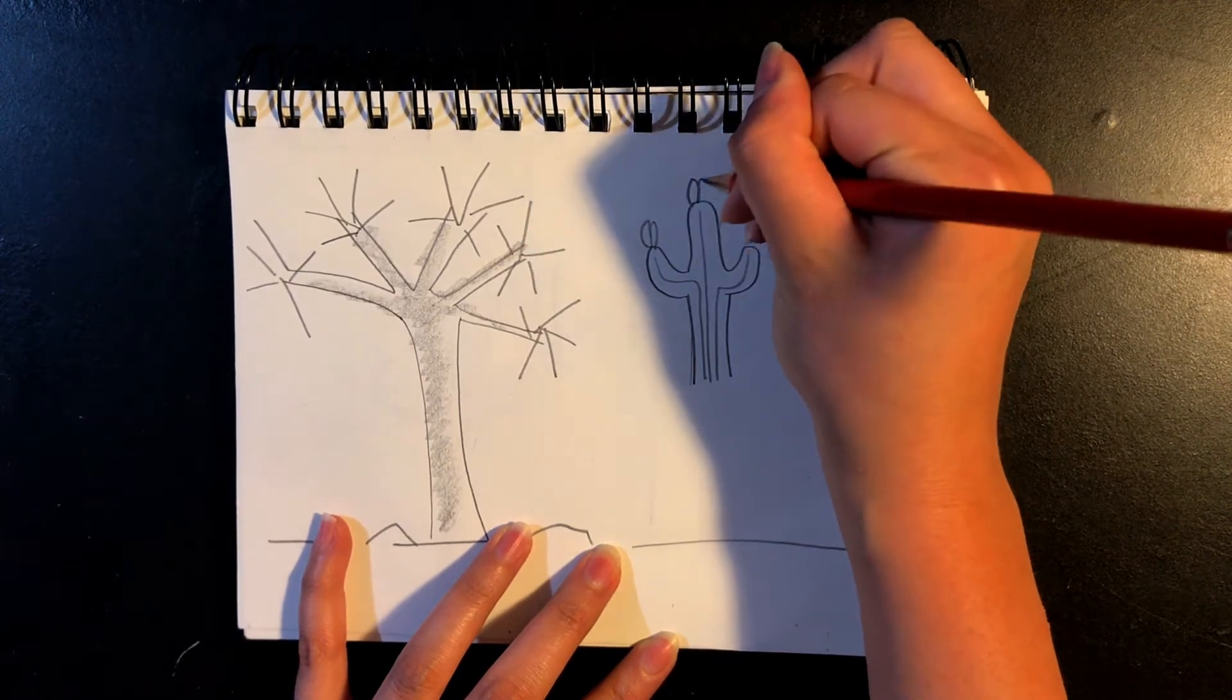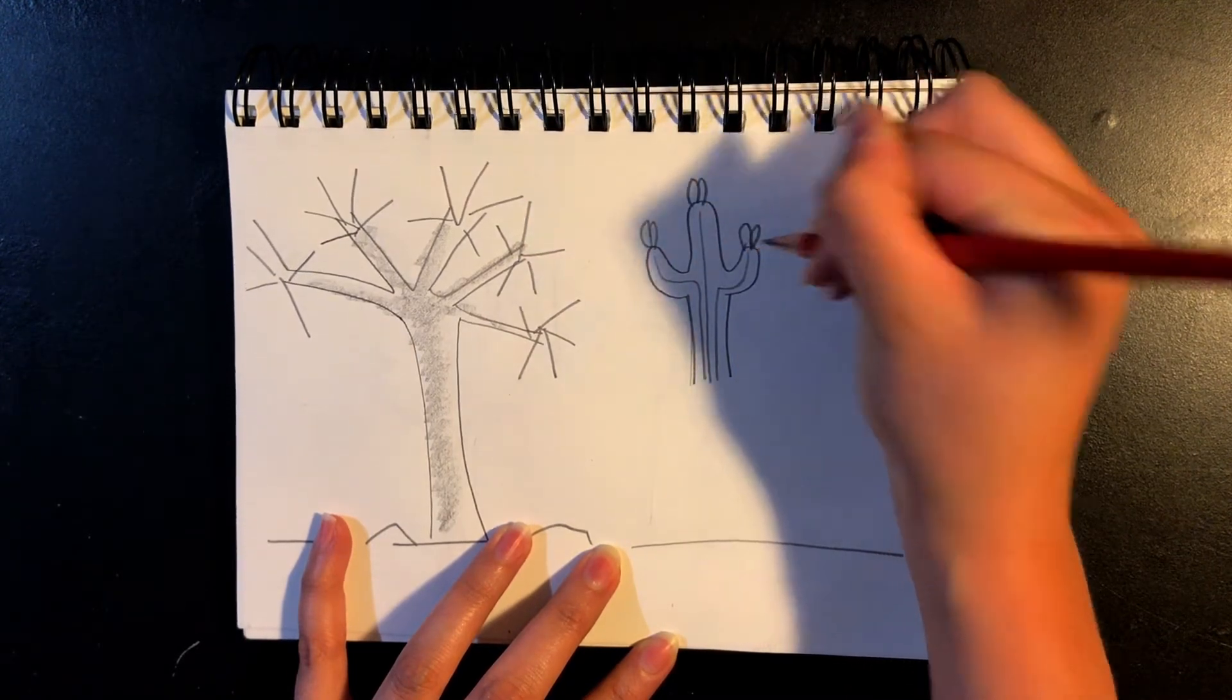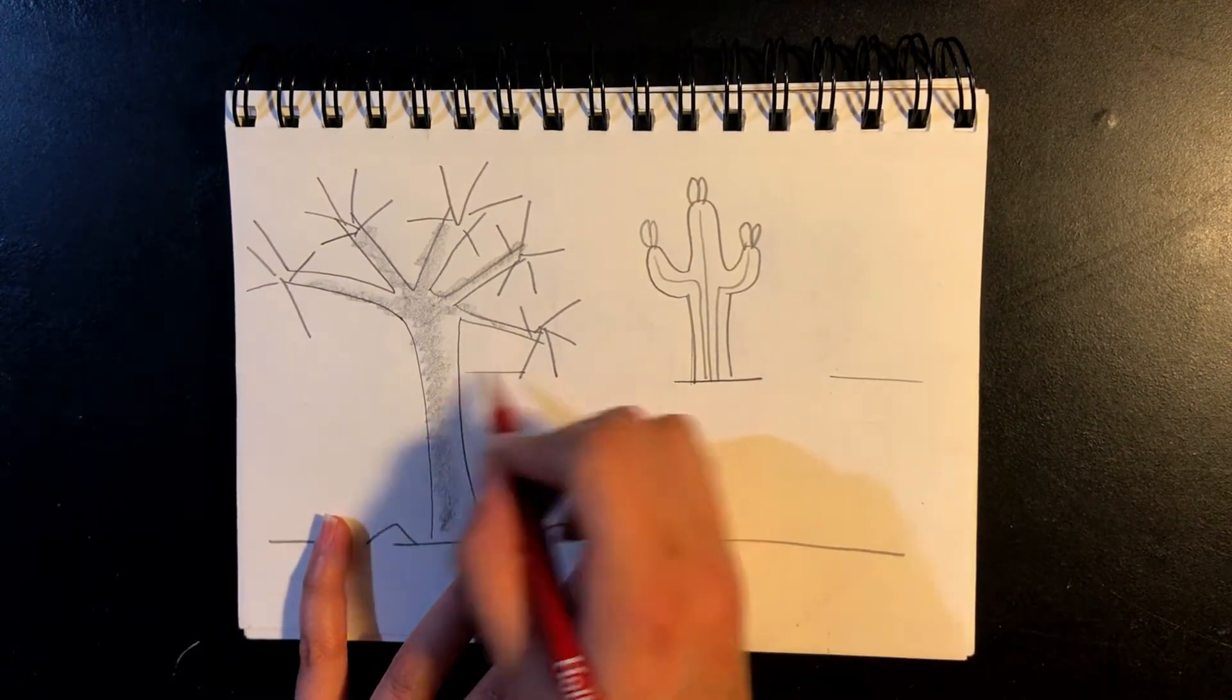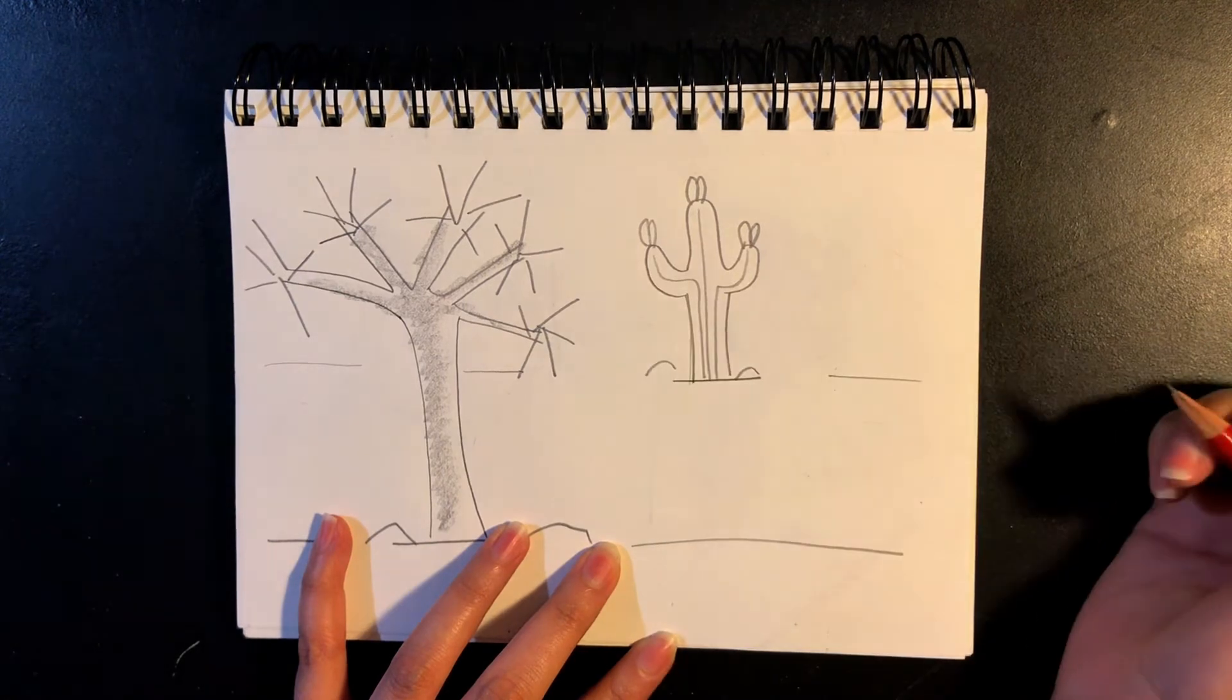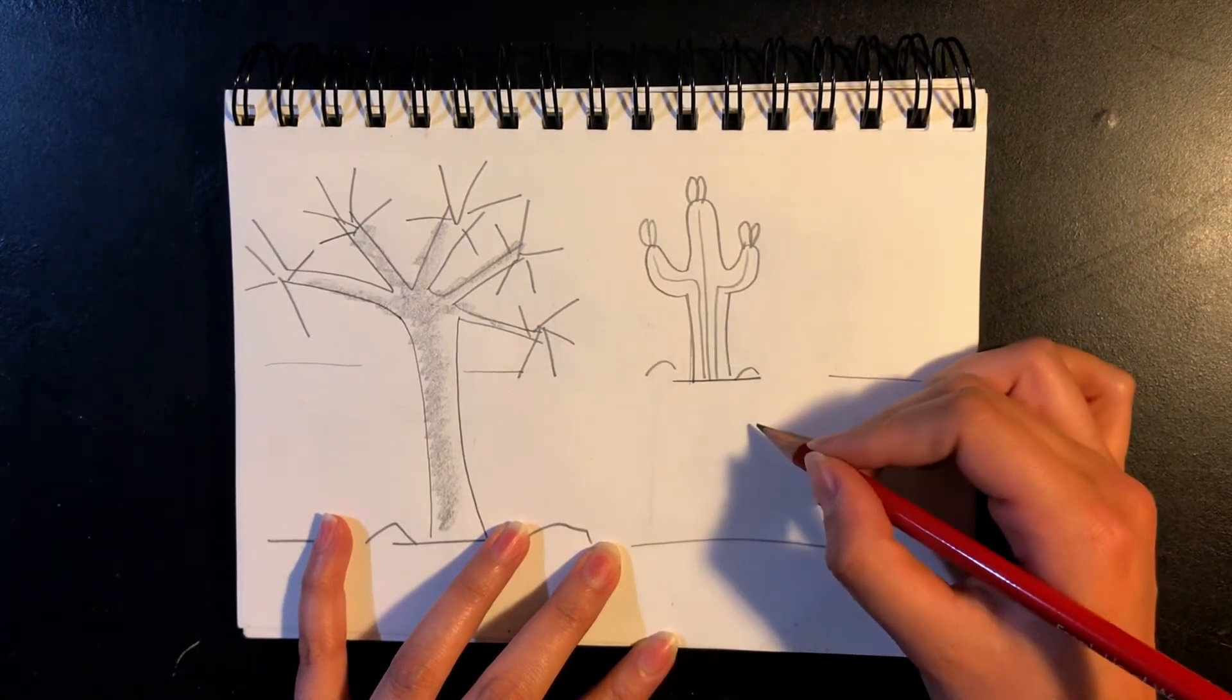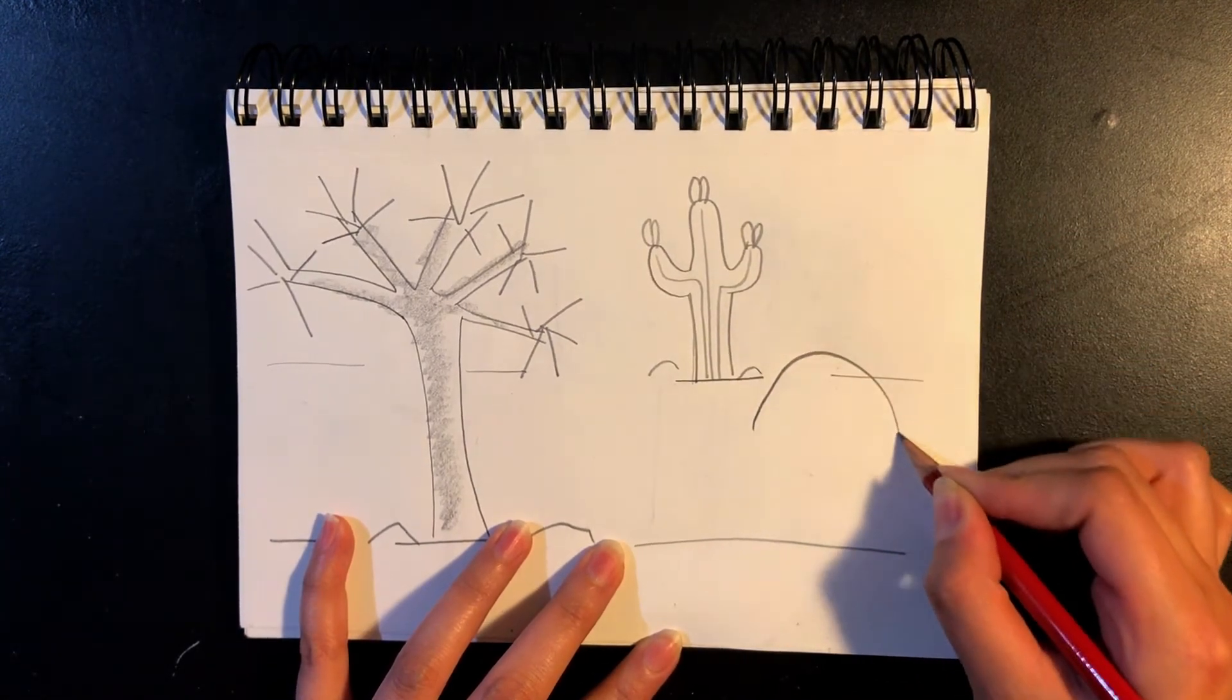So I've got my cactus. And I'm going to add my ground level again, just so I know where I'm at in the middle ground and some rocks. And because my viewer's eye is to the middle ground, I'm going to draw a tortoise.